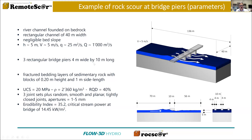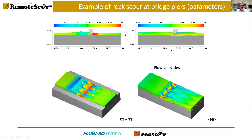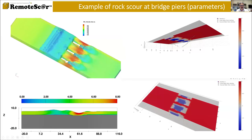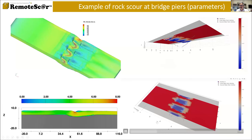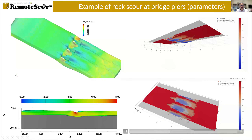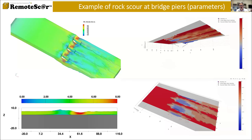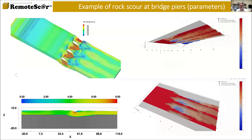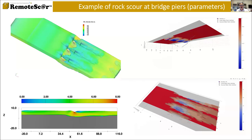Let me quickly show you two other examples. Three bridge piers founded on rock in a river with a sedimentary rock, UCS strength 20 megapascal. You can see the initial flow conditions with the contraction of flow generated by the piers. Then when we have scour of the bedrock, we will see in the videos — hydraulics on the left-hand side and RockScour on the right-hand side — how progressively there is scour around the bridge piers and also in the wake of the turbulence generated by the piers towards downstream.